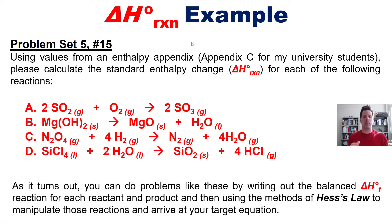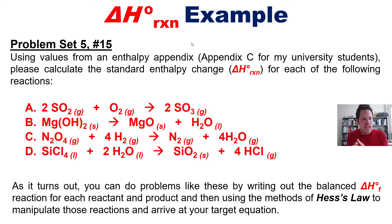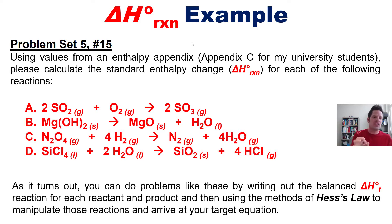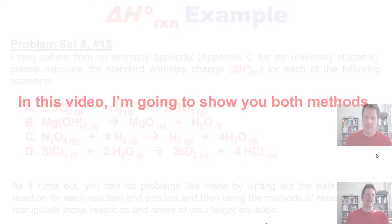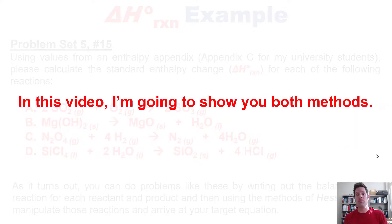You can do problems like these by writing out a balanced delta H sub F, or enthalpy of formation reaction, for each reactant and product, and then using Hess's law to manipulate those reactions to arrive at your target equation. This is a different way of getting to the exact same answer, though this way ends up being a little bit longer. In this video I'm going to show you both methods.